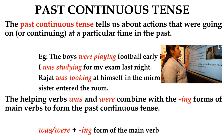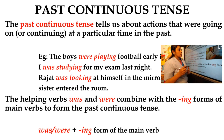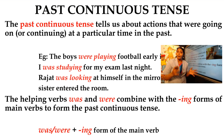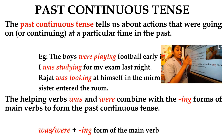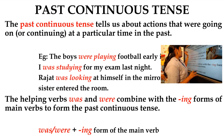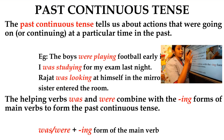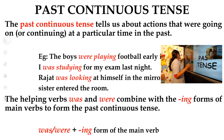The past continuous tense tells us about actions that were going on or continuing at a particular time in the past. Past tense tells us that an action took place in the past. But in past continuous tense, the action was going on or continuing at a particular time in the past itself — not in the present. That is past continuous tense.